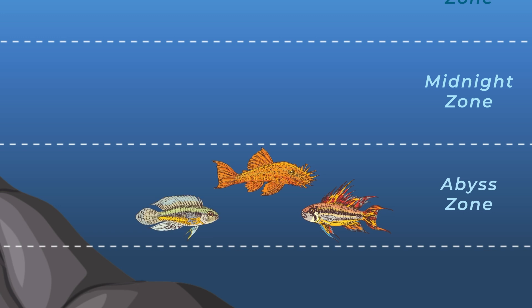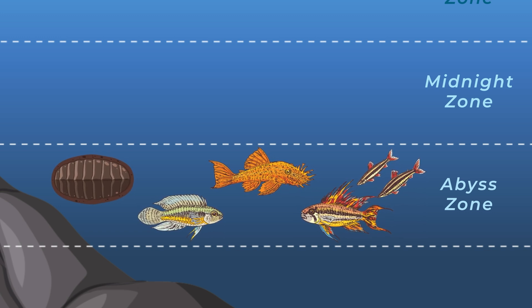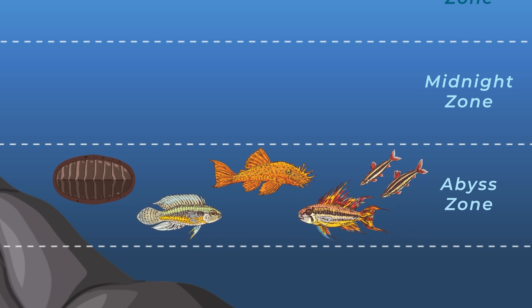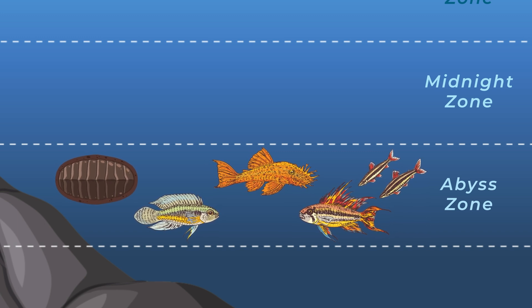Not many animals can handle these harsh conditions, but some creatures like sea cucumbers and spiny fish live here. They don't need much light or food. They've adapted to eat whatever little bits of food drift down from the ocean above.